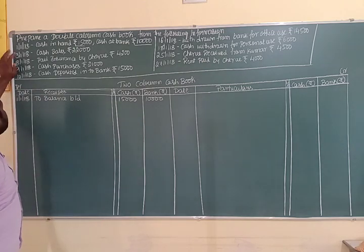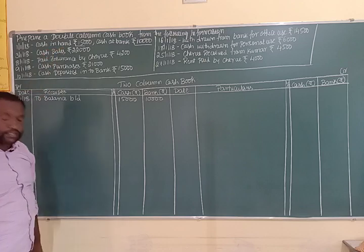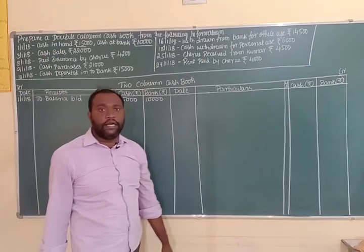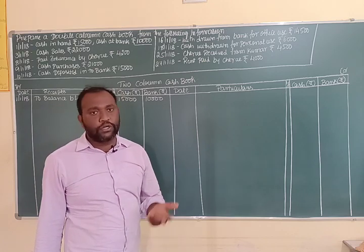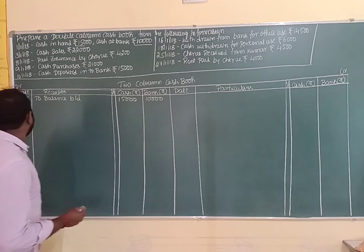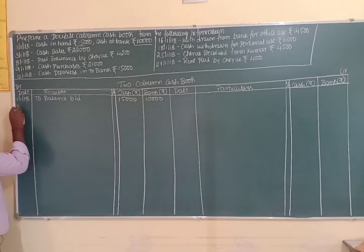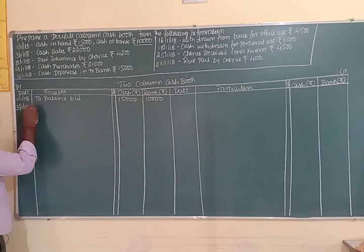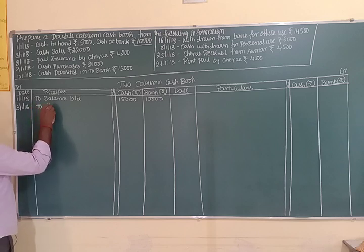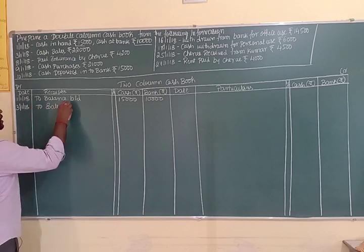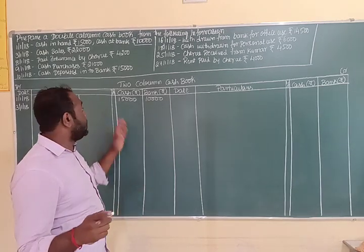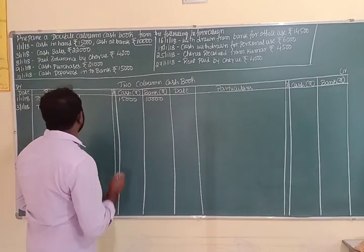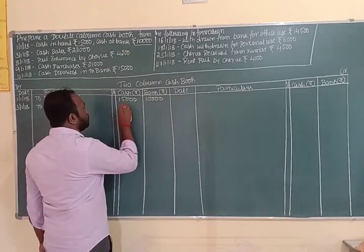On 3rd January 2018, cash sales rupees 22,000. The journal entry will be: cash account debit to sales account. We record this as 'To Sales Account' on the debit side, entering 22,000 in the cash column. There is no entry in the bank column.